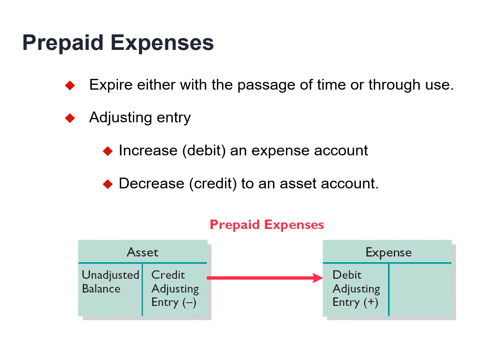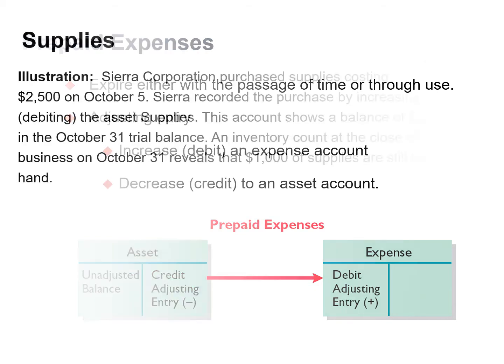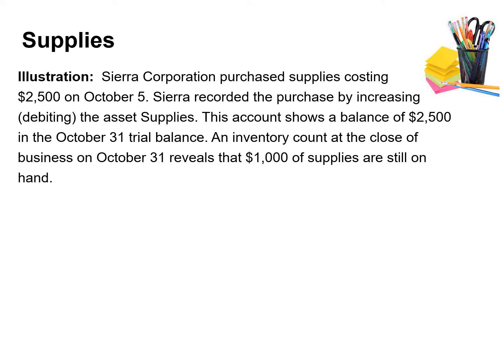The adjusting entry records the expense for the current accounting period and adjusts the asset account. The entry for prepaid expenses results in an increase or a debit to an expense account and a decrease or a credit to an asset account. The purchase of supplies, such as paper and envelopes, results in an increase or a debit to an asset account. During the accounting period the company uses supplies. Rather than record supplies expense as the supplies are used, companies recognize the supply expense at the end of the accounting period. At the end of the accounting period, the company counts the remaining supplies. The difference between the unadjusted balance in the supplies account and the actual cost of supplies on hand represents the supplies used, or an expense for that period.